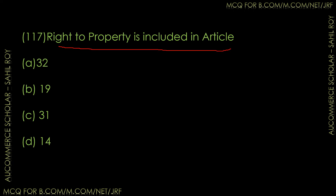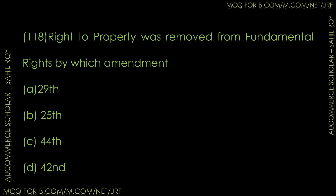Question number 117: Right to property is included in which article — Article 32, 19, 31, or 14? The correct answer is Option C — Right to Property is included in Article 31 of the Indian Constitution.